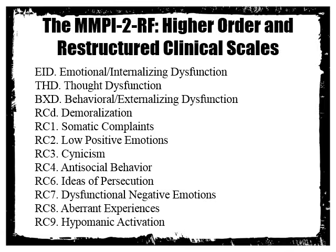RC5 is notably missing from the current MMPI. Historically, the first edition had a subscale called masculinity-femininity that tapped into gender role identification and could identify individuals leaning toward being gay, lesbian, or bisexual. This was removed in 1989, in part because in 1980 the DSM-3 had already removed homosexuality as a mental disorder. Before 1980, homosexuality existed as a mental disorder in the United States, so that subscale was essentially diagnosing homosexuality.